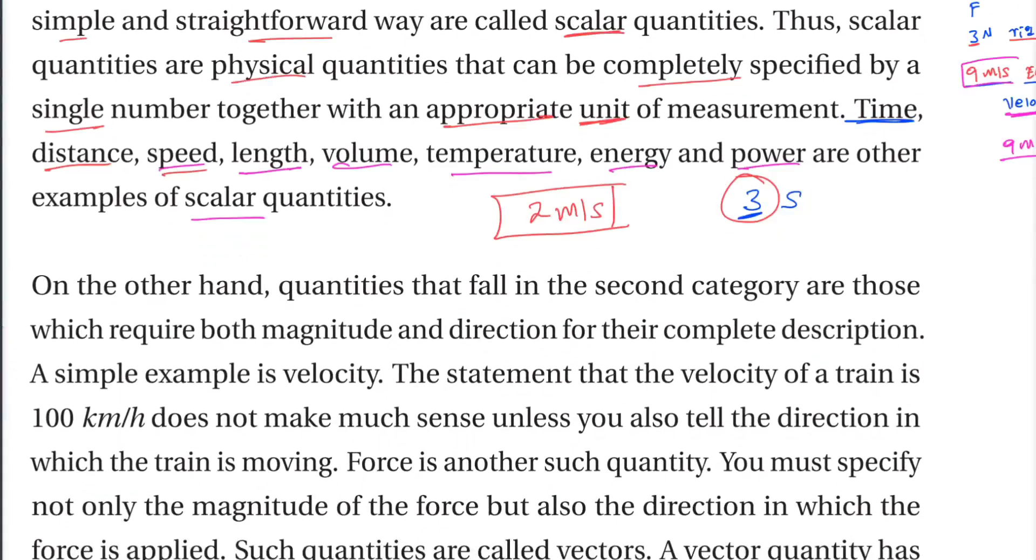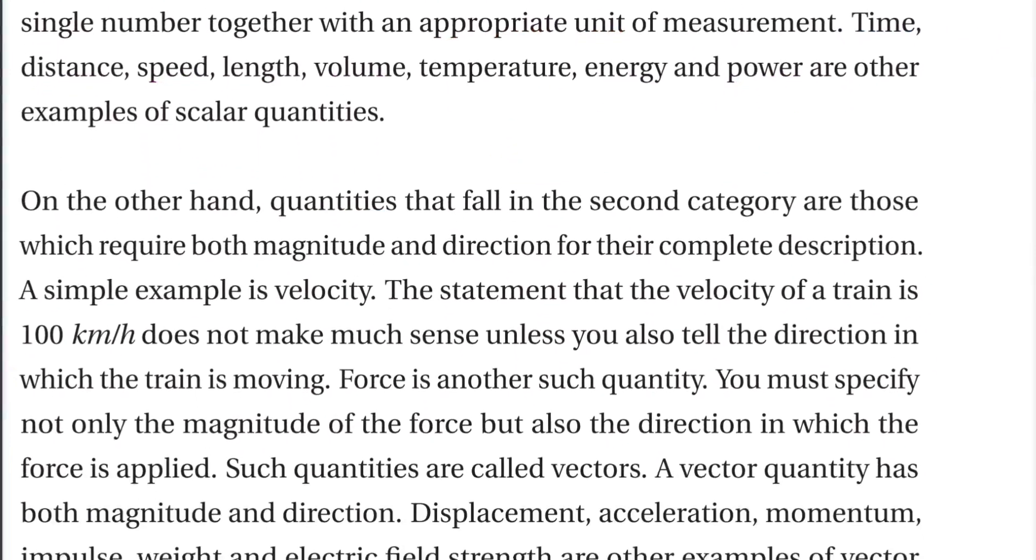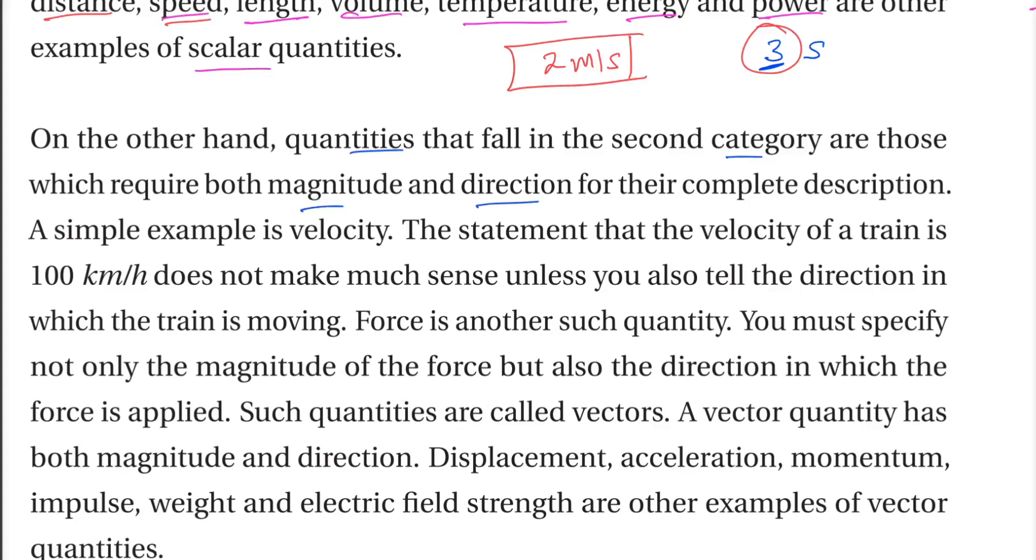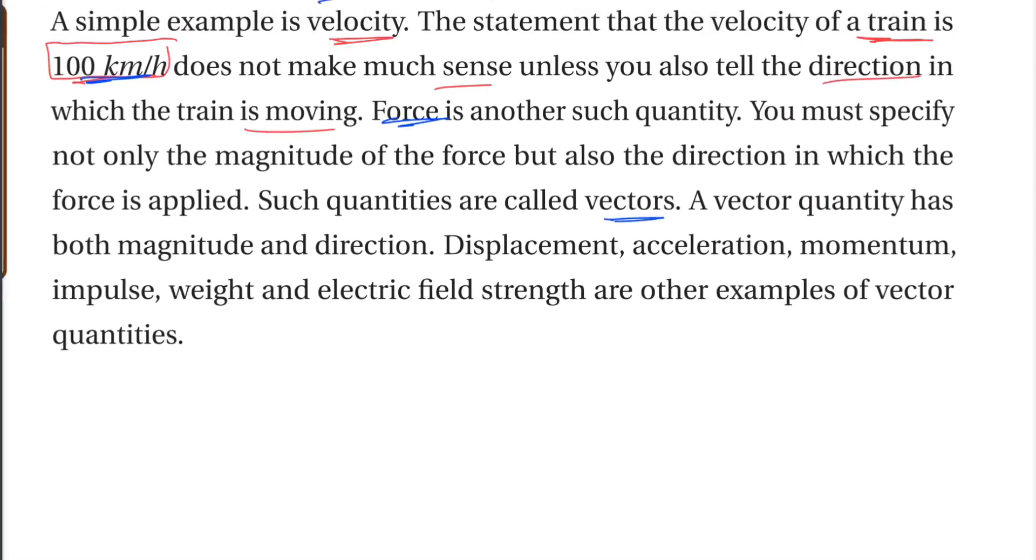For example, on the other hand, quantities that fall in the second category are those which require both magnitude and direction. Simple example: velocity 10 km per hour. Train 10 km per hour does not make much sense unless you also tell the direction in which the train is moving. The vector quantity has both magnitude and direction.